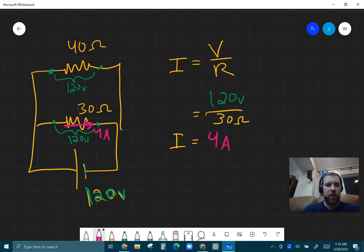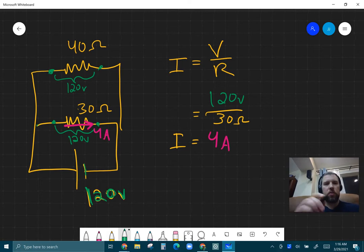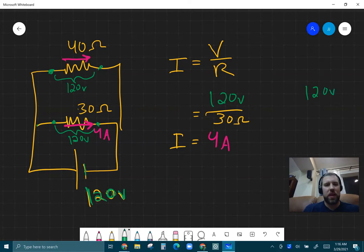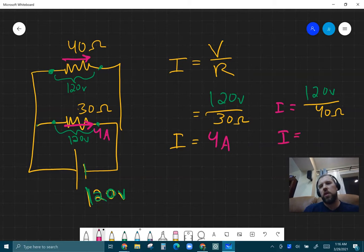Now if that is true, then I can ask myself, okay, what's the current in the other resistor? Is it going to be the same or not? Some of you are already thinking, Mr. J, it's a different resistance. Of course it's not going to be the same. And you would be correct. So let's say, divide by a 40 ohm resistor. And that is going to give me a current of 120 divided by 40, 3 amps. Huh.